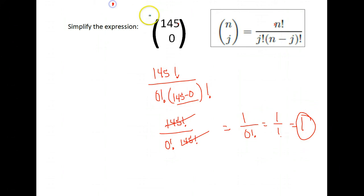And coincidentally, any number in the top here, if there's a zero down here in the bottom, you're going to get one as your answer. It could be 20,542 choose zero, your answer would end up being one.